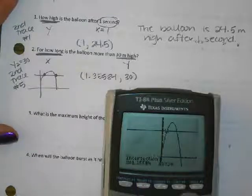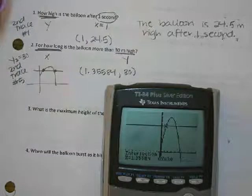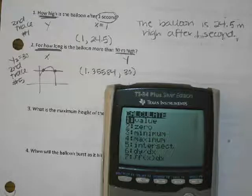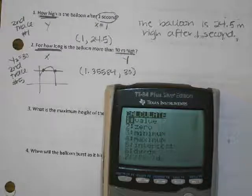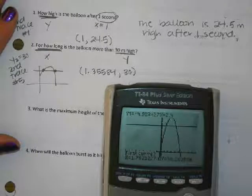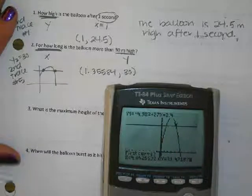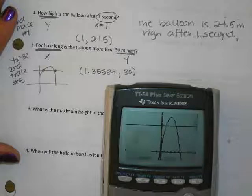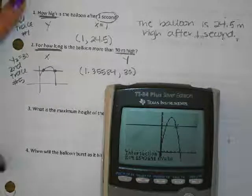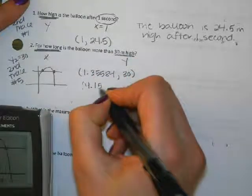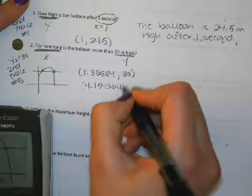I'm not going to round this point yet — I'm going to write down as many decimals as I can from my first intersection. Then I'm going to do second trace number 5 again. I don't have to get my cursor right on top of the intersection; I just have to be closer to the right one than the left one. Press enter, enter, enter, and it will find the second intersection.